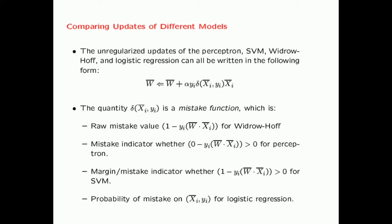For the perceptron, the mistake function is a binary indicator — 0 or 1 — for whether the instance is misclassified. For the SVM, it is a margin mistake indicator: it equals 1 not only for misclassification but also when the training point is uncomfortably close to the decision boundary. For logistic regression, it is the probability that your prediction is a mistake, because logistic regression is a probabilistic model and its mistake function has a probabilistic interpretation. All the updates are mistake-driven updates, and they are all quite similar.